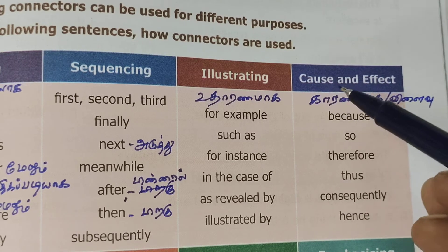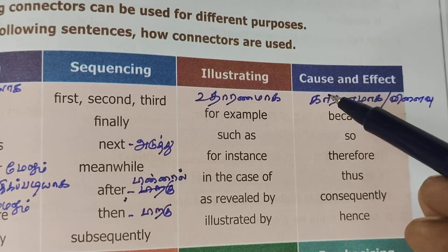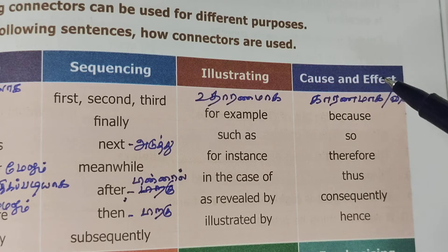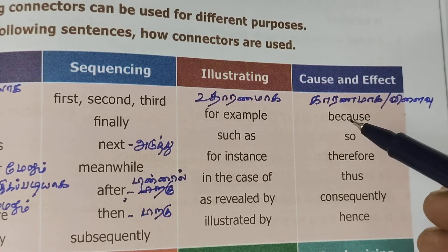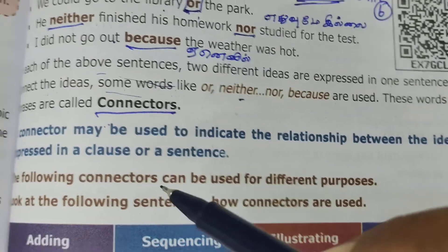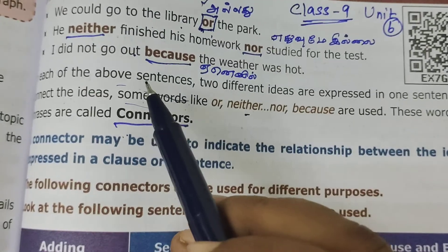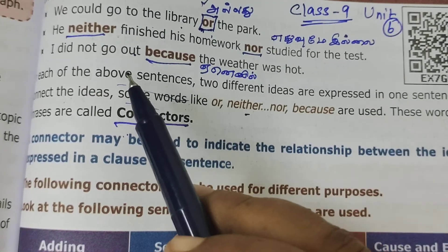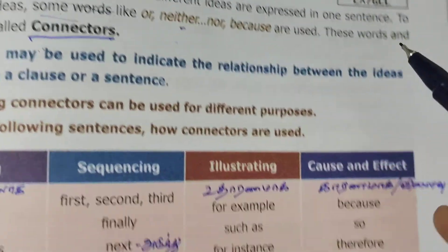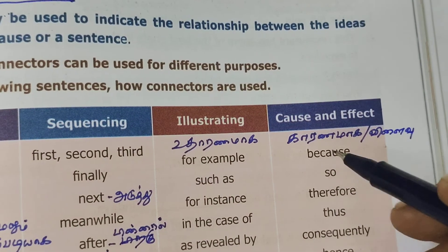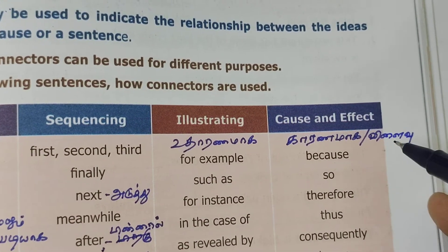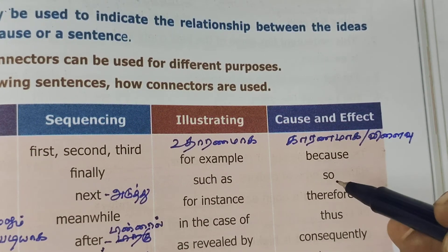Now cause and effect: the cause and effect connector explains the reason for something. For example: 'I will not leave. What is the reason? The weather was hot.' So this is a good example of cause and effect — using 'because'. 'Because' connects the cause and effect.